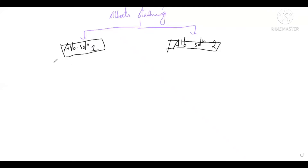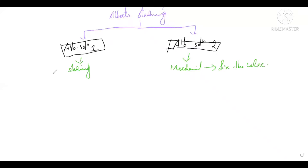Albert stain is a mixture of two solutions: Albert solution 1 and Albert solution 2. Albert solution 1 is mainly meant for staining and coloring — it differentially colors the bacteria with one color while the metachromatic granules appear in another color. Albert solution 2 acts as a mordant, fixing the absorbed color in both the bacteria and the metachromatic granules.